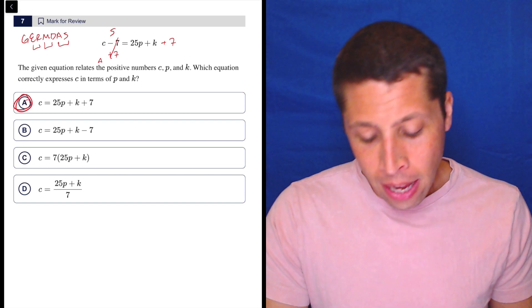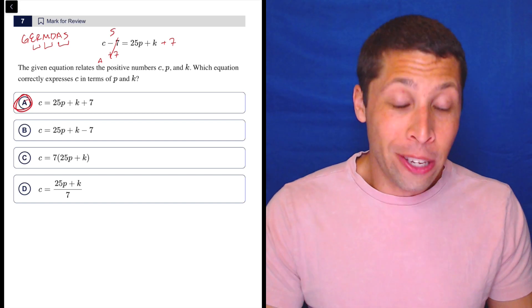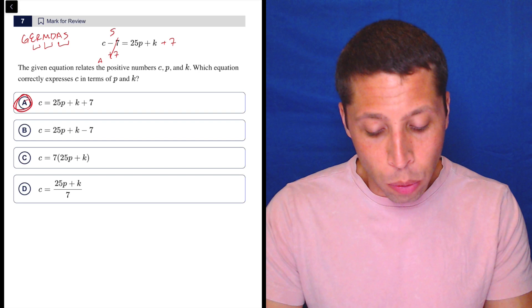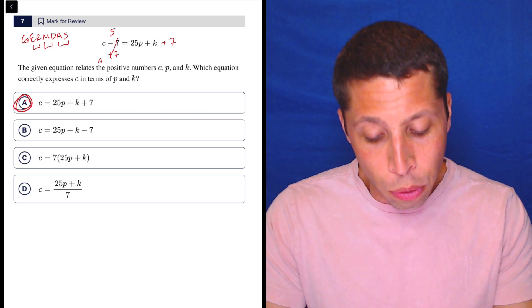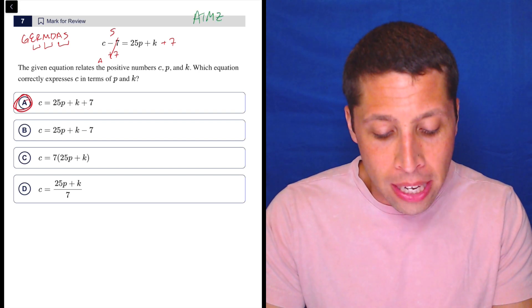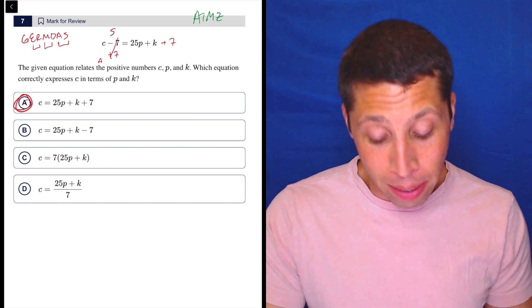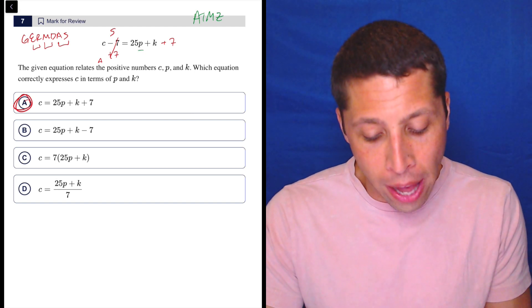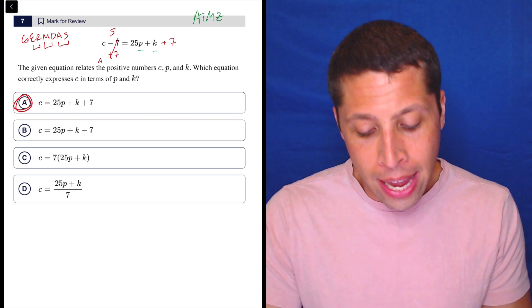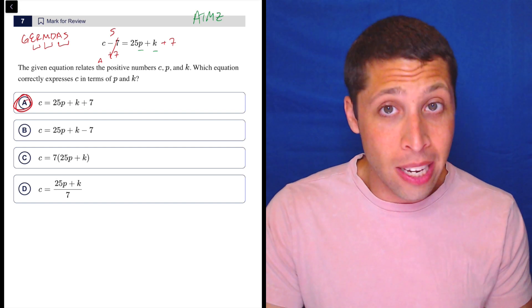There's not really a lot of complexity to this. You really need to know how to do this, but these are also questions that tend to lend themselves to arithmetizing if you need to. I do not really recommend it here, but you could come up with a value for P and a value for K and then solve for C and see what happens.